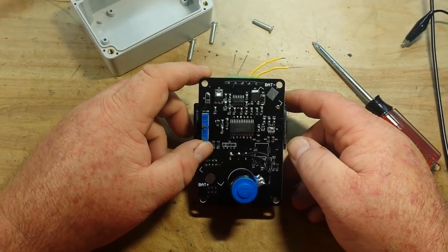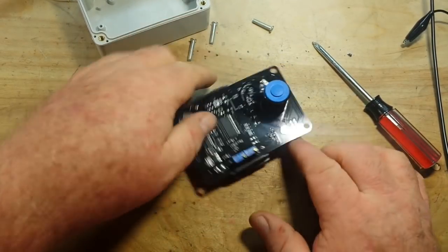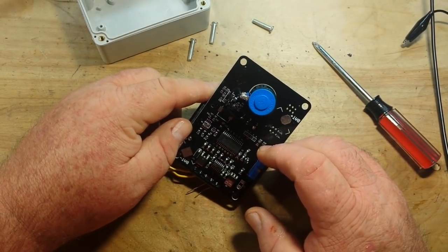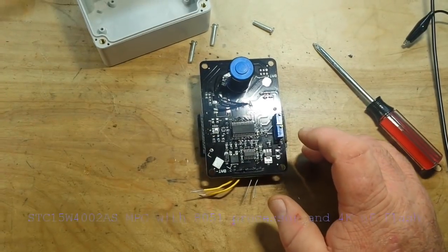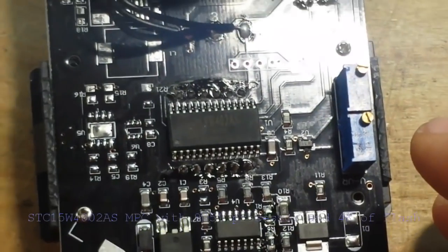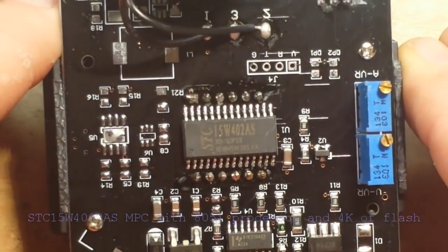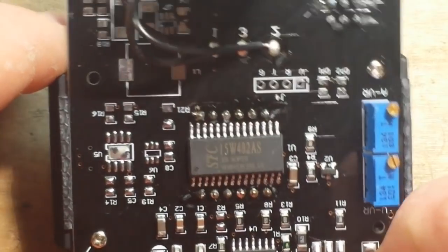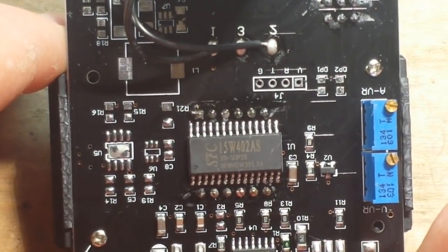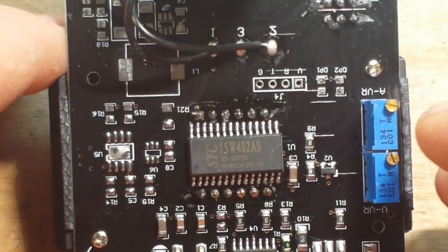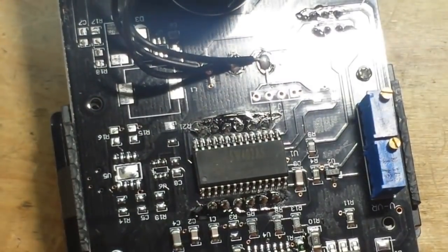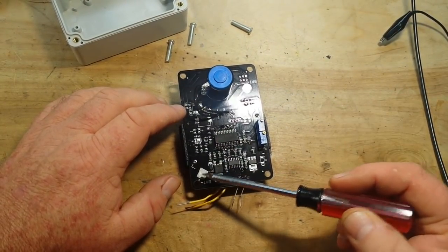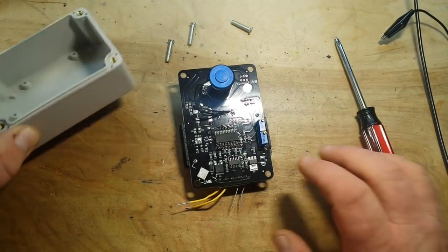So now this is kind of interesting. We've got an IC here. SFC or STC? I can't quite tell. Maybe you guys can see it. We've got another IC here. Diode. This looks like maybe a voltage regulator. Transistor. Another little transistor. A couple trimmers. But what I find interesting is we've got a battery plus and a battery minus.